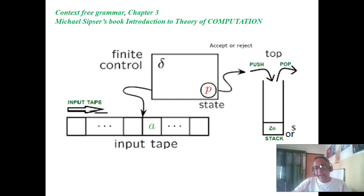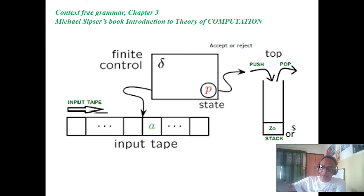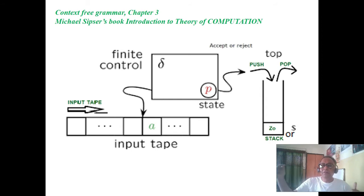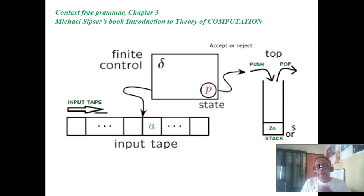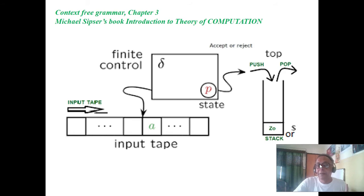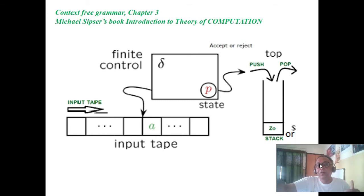Deterministic context-free languages can have unambiguous grammars. The parse tree from the left-hand derivation will be one single one, and the parse tree from the right-hand derivation will also be single. One great fact is that complement of a context-free grammar is not generally context-free, but this rule holds for deterministic context-free grammar. The complement of a deterministic context-free grammar is also a deterministic context-free grammar.